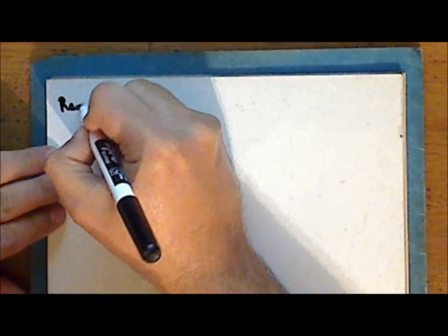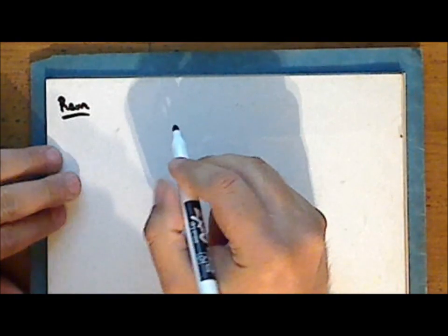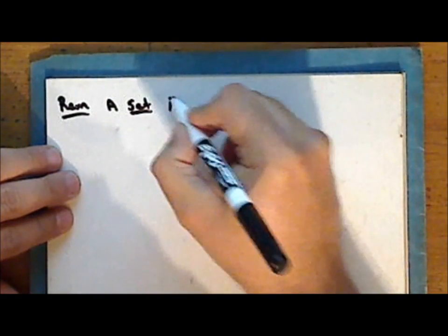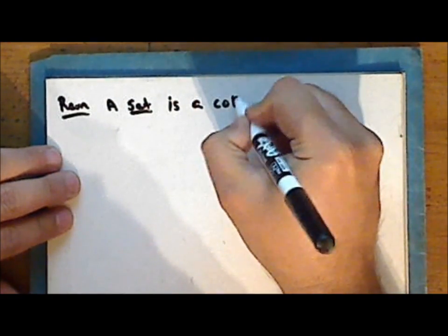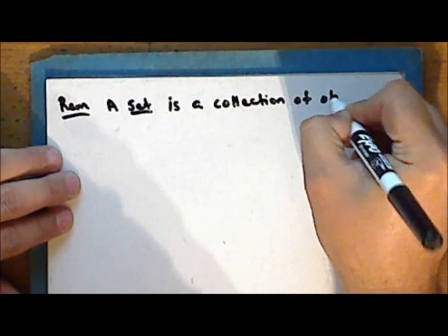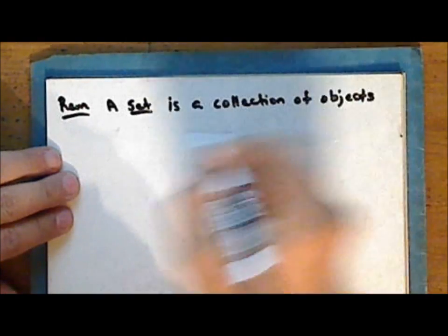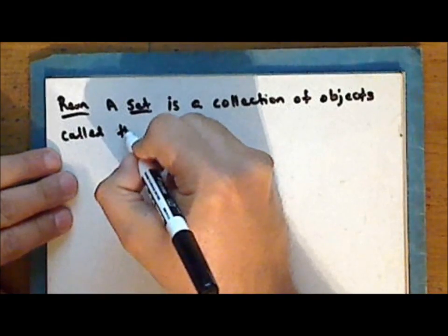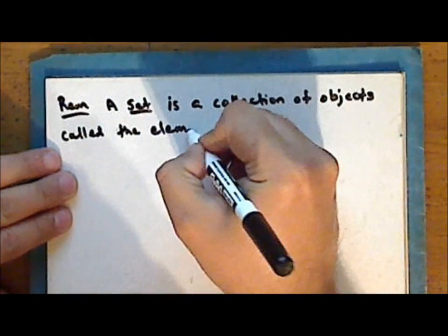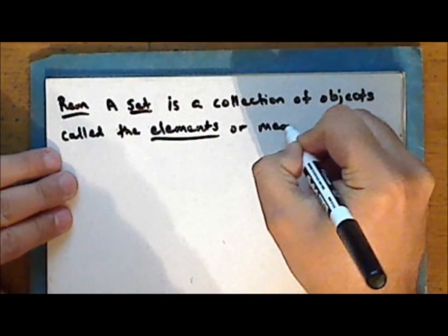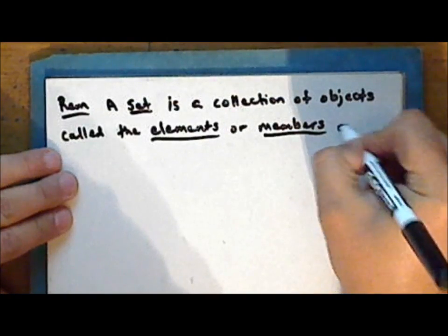The first term we take as a primitive notion from set theory — that is, we do not truly define it. Rather, we accept as a fundamental intuitive fact that a set is a collection of objects, and those objects are called the elements or members of the set.